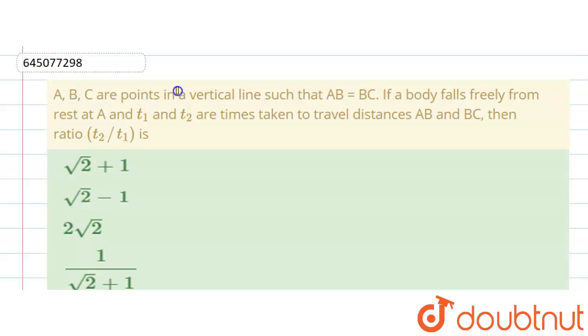Such that AB is equal to BC. If a body falls freely from rest at A, and t1 and t2 are time taken to travel distance AB and BC, then ratio t2 upon t1 is?